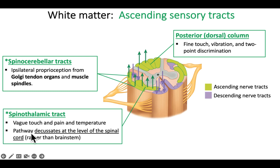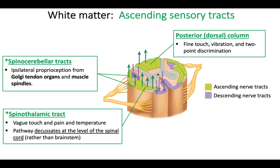What's interesting about the spinothalamic tract is the pathway decussates — meaning it crosses over to the other side, and it does this at the level of the spinal cord. So the signal comes in from the right side; let's say your right hand touches something that causes pain — that signal crosses over right away to the other side of the spinal cord and then goes up to the opposite side. Some other signals cross at the brainstem, but the spinothalamic tracts get their information from the opposite side.